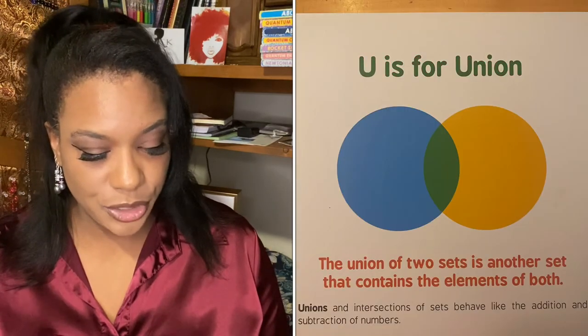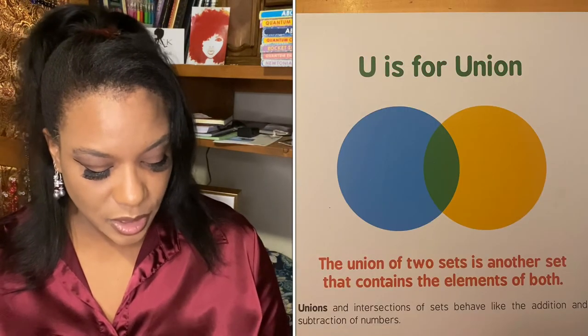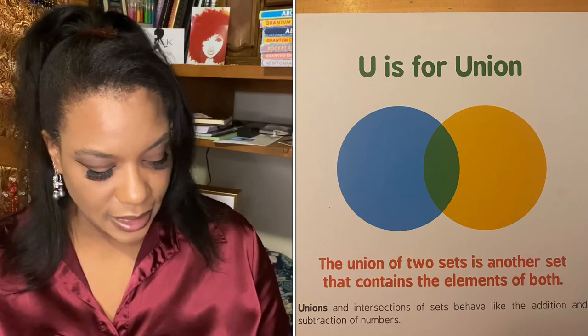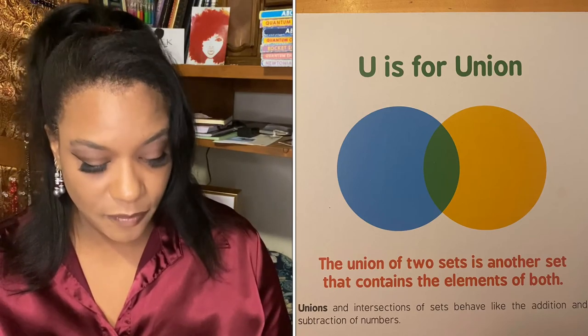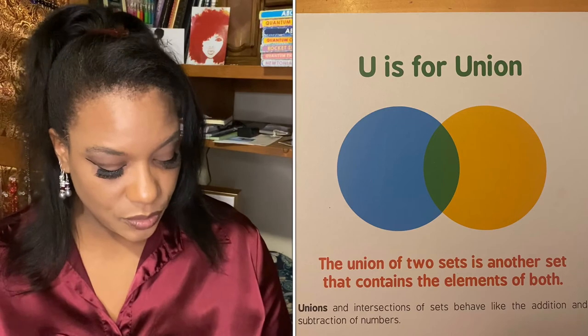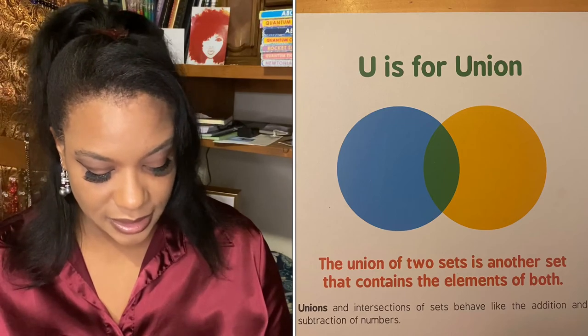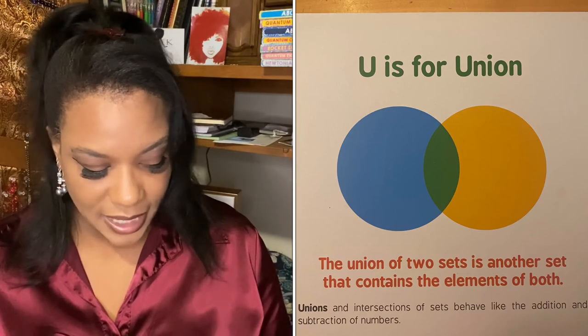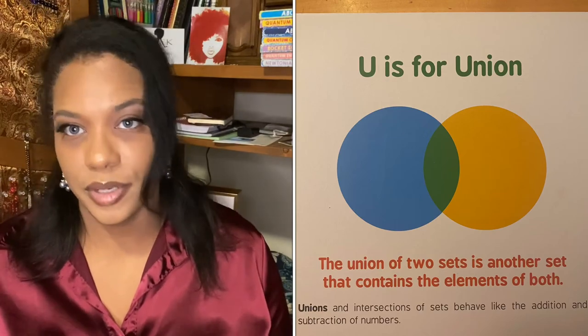U is for union. The union of two sets is another set that contains the elements of both. Unions and intersections of sets behave like the addition and subtraction of numbers.